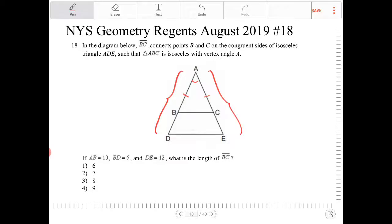So because of this, this isosceles triangle, or the two isosceles triangles, are going to be similar.